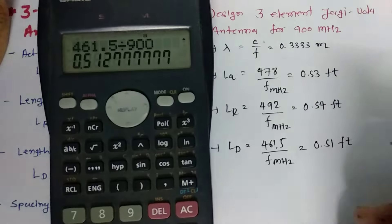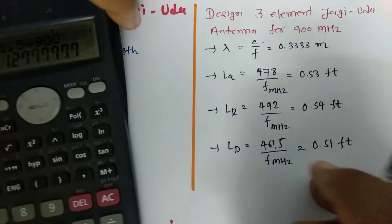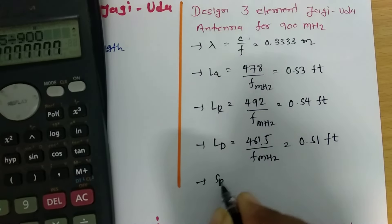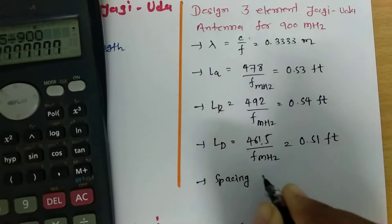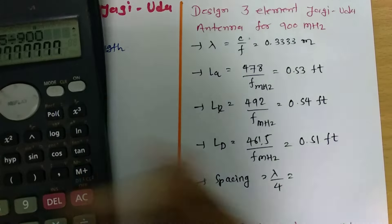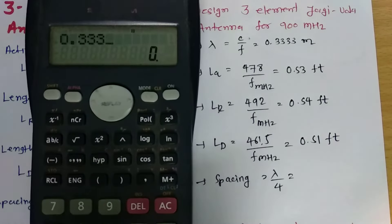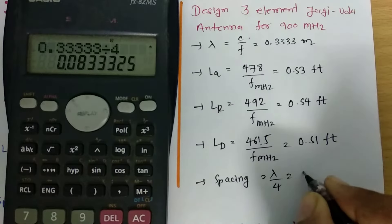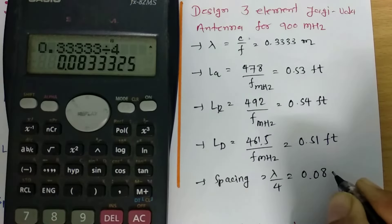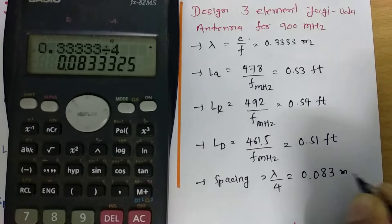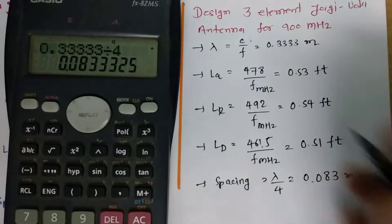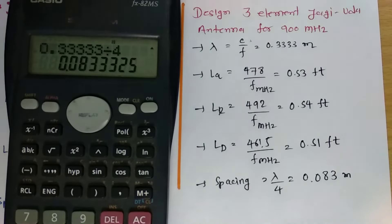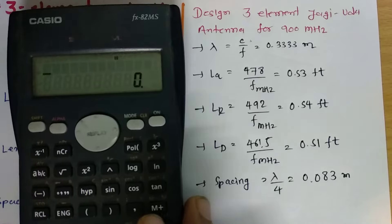So these are the lengths in feet for the three element Yagi-Uda. The spacing should be lambda by 4, which is 0.3333 divided by 4, giving spacing of 0.083 meter. The element lengths are currently in feet.